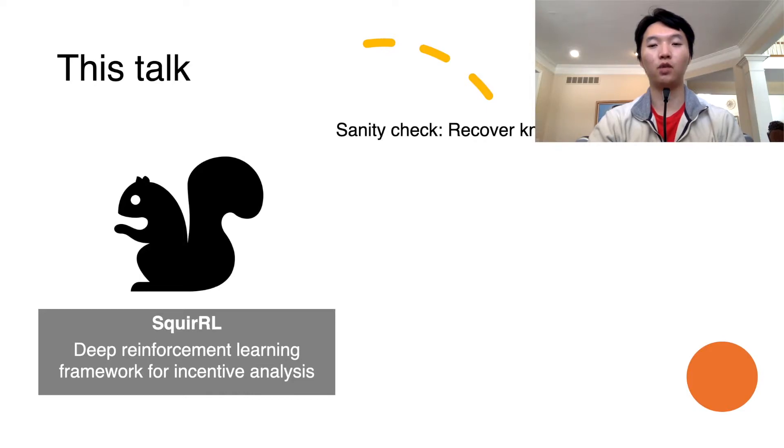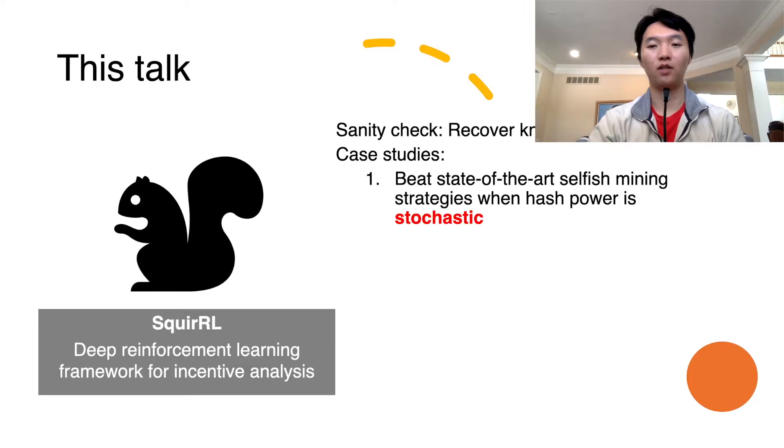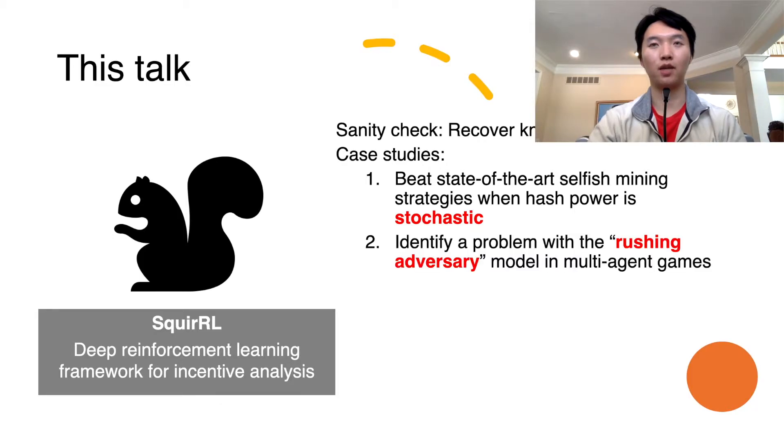Second, we get the following new results. First, we beat state-of-the-art selfish mining strategies when hash power is stochastic. Second, we identify a problem with the rushing adversary model in multi-agent games, and this is not specific to the blockchain setting.